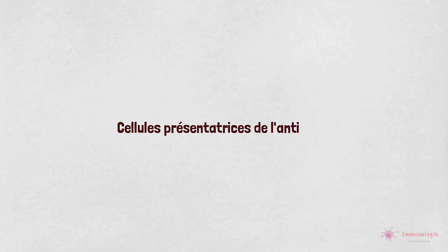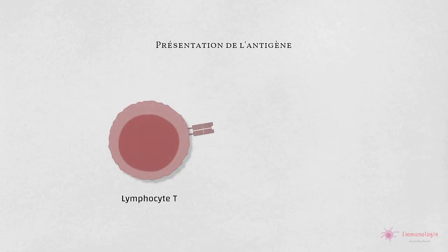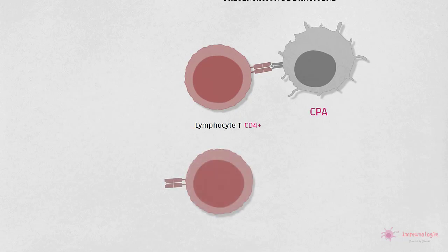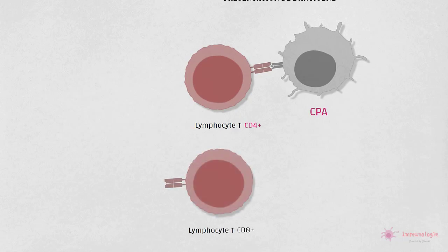Les cellules présentatrices de l'antigène. L'étape critique dans l'induction d'une réponse lymphocytaire T est la présentation de l'antigène aux cellules T par d'autres cellules, appelées CPA. Par convention, CPA est toujours le terme utilisé pour désigner les cellules spécialisées qui présentent des antigènes aux lymphocytes T CD4, car toutes les cellules nucléaires peuvent présenter des antigènes peptidiques aux lymphocytes T CD8, mais elles ne sont pas toutes appelées CPA.